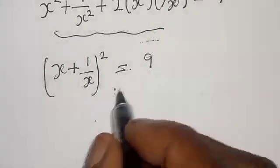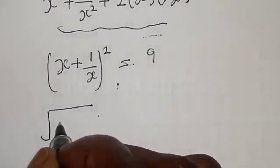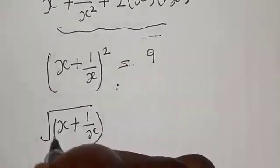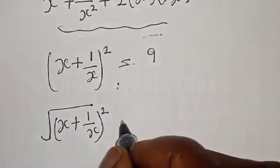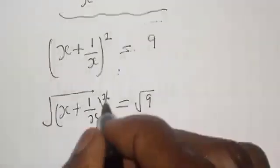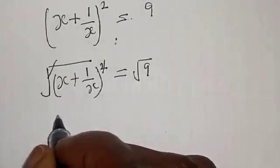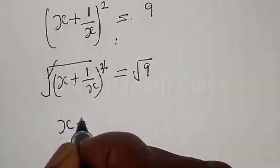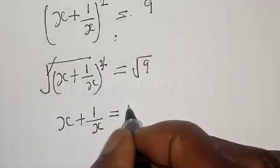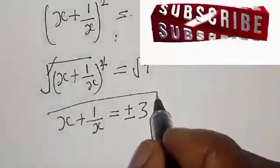Taking the square root of both sides, the square root of (s plus 1/s) squared is equal to the square root of 9, which is 3. Therefore, s plus 1 over s is equal to plus or minus 3. That is our final answer.